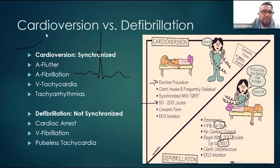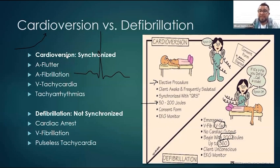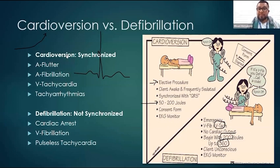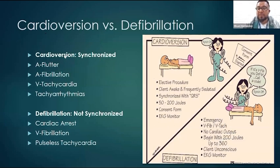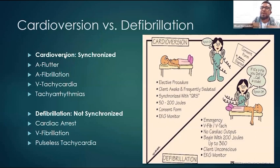When it comes to cardioversion, there are different ways of doing it. There's the electrical one, but you also have chemical cardioversion. Chemical means that you give them medication. A lot of the drugs we're going to be discussing are chemical cardioversion, which brings that rhythm out of its abnormal state through pharmacological intervention.